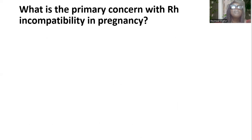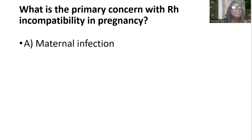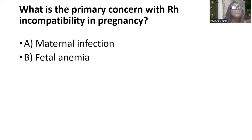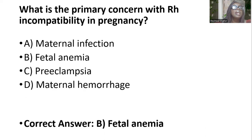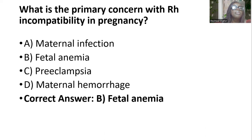What is the primary concern with RH incompatibility in pregnancy? Options are maternal infection, fetal anemia, pre-eclampsia, and maternal hemorrhage. And the answer is B — fetal anemia.